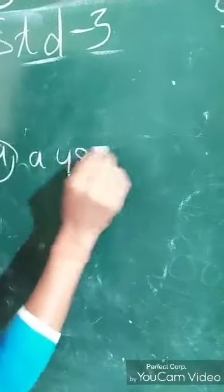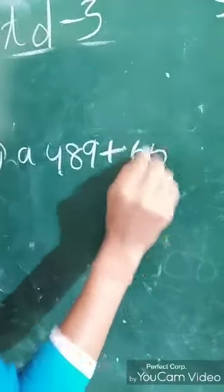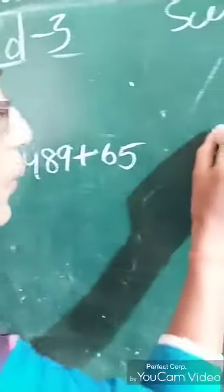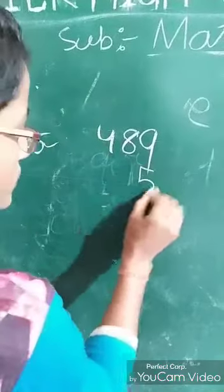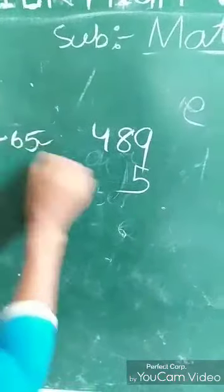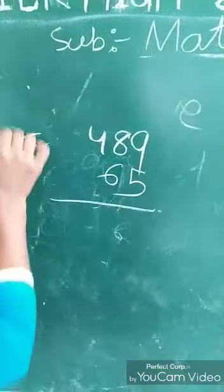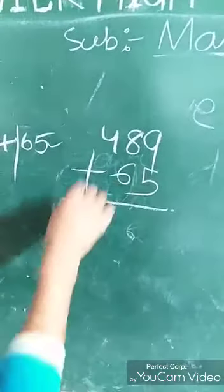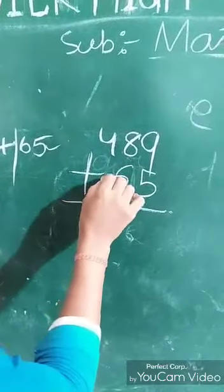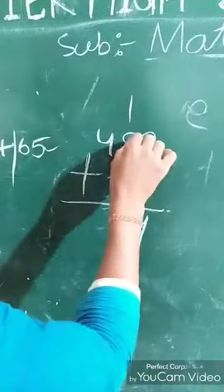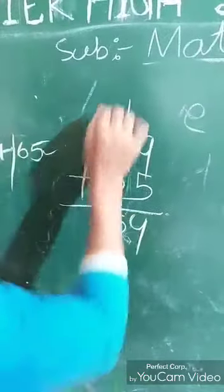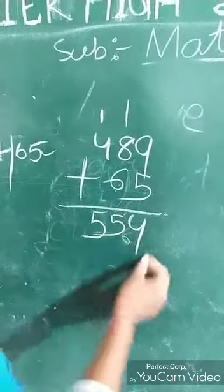First: 489 plus 65. How do I count? First, write 489. We have to start with the ones place — ones place is 5, so take 5. After that, 6 goes in the tens place. If you have no number in the hundreds place, leave it. Then 9 plus 5 is 14, write 4 carry 1. 8 plus 6 is 14, plus 1 is 15, write 5 carry 1. Then bring down the 4 plus 1 is 5.